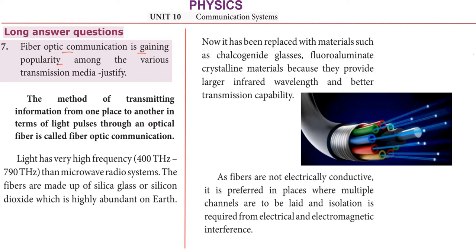We have already uploaded 6 questions, so you will need clarity. The question is why Fiber Optic Communication is gaining popularity among transmission media. When we get ready for communication, there is one wired and one wireless type of communication. What is wireless communication? A transmitter and a receiver — we can communicate with these two parts.